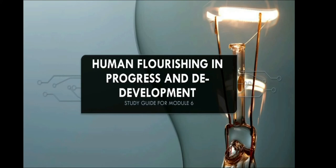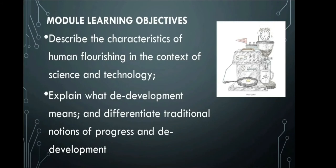Good afternoon, guys. We have reached the last topic for our midterms, and it is entitled Human Flourishing in Progress and De-Development. For our module learning objectives: describe the characteristics of human flourishing in the context of science and technology, and explain what de-development means and differentiate traditional notions of progress and de-development.